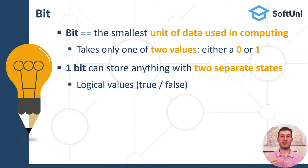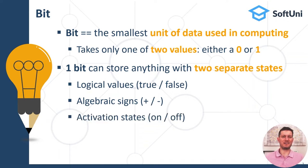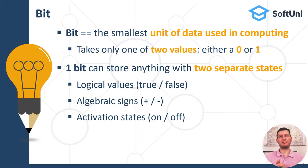For example, logical values like true or false — such as whether registration is open or closed. Algebraic signs like plus and minus — for example, a positive number or a negative number. Activation states like on or off.